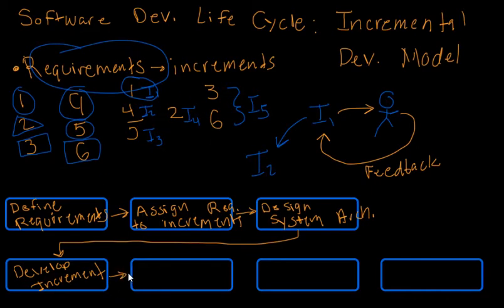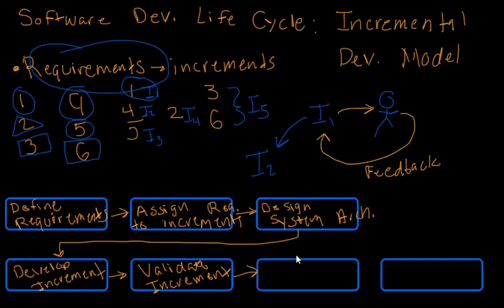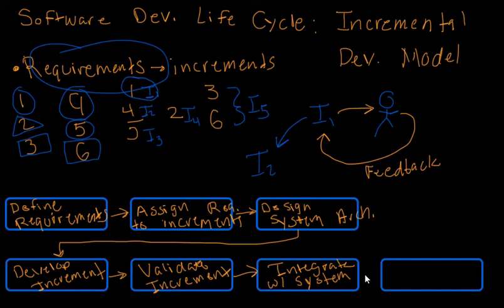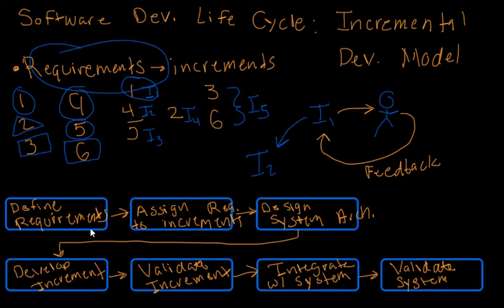After developing an increment, we move to the next phase: validate the increment. This is just testing to make sure it meets all the requirements. After that comes the integration phase — integrate the increment with the system — which is very similar to the integration of modules in the waterfall cycle. Then we go to the final phase: validate the system, to make sure the system meets all the requirements defined in the define requirements phase.